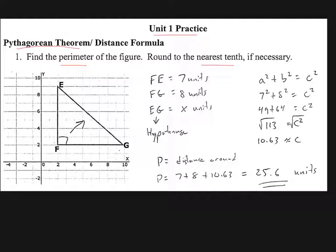The distance around the figure is what the perimeter is. So I need to know this distance right here. If I count boxes, I'll notice that that's seven blocks long, or seven boxes long. And down across the bottom, that's eight units. But it's this diagonal portion that I don't know.